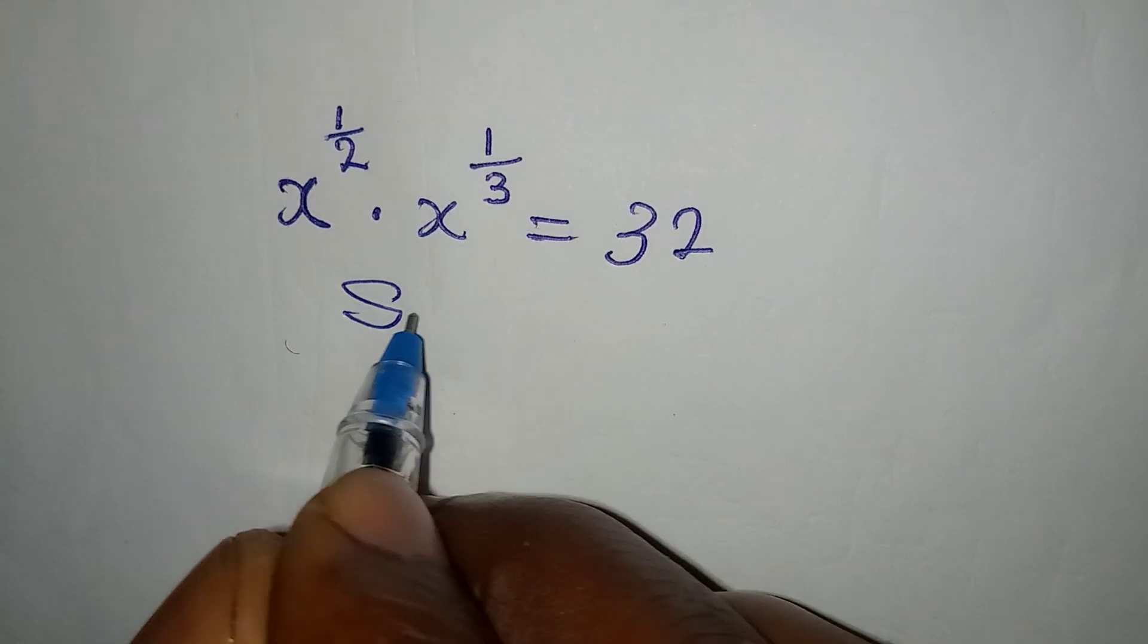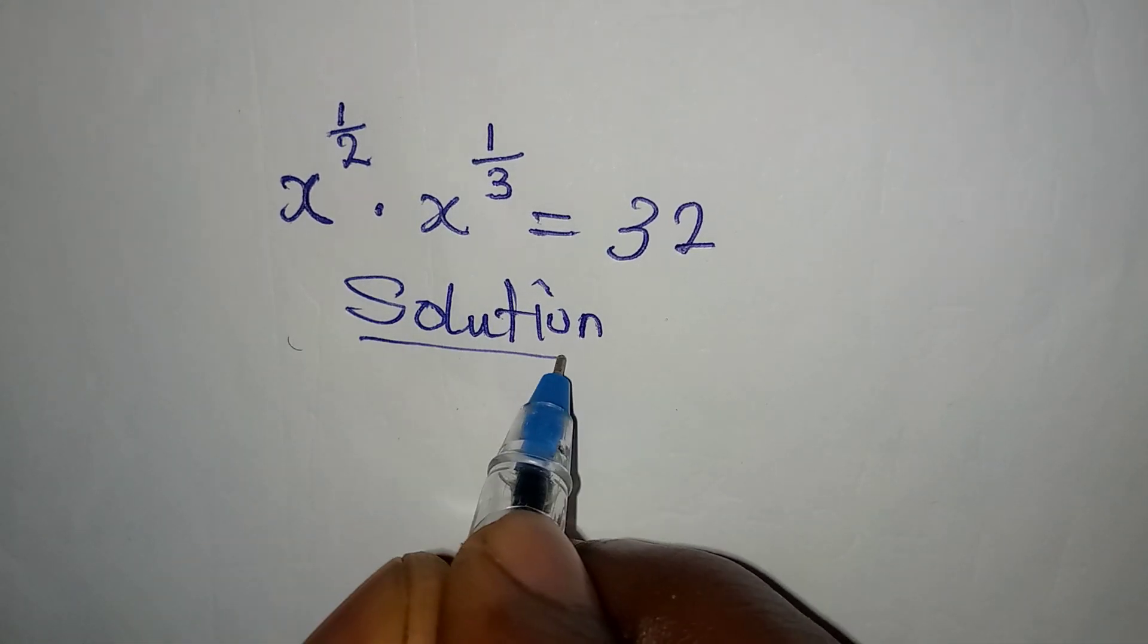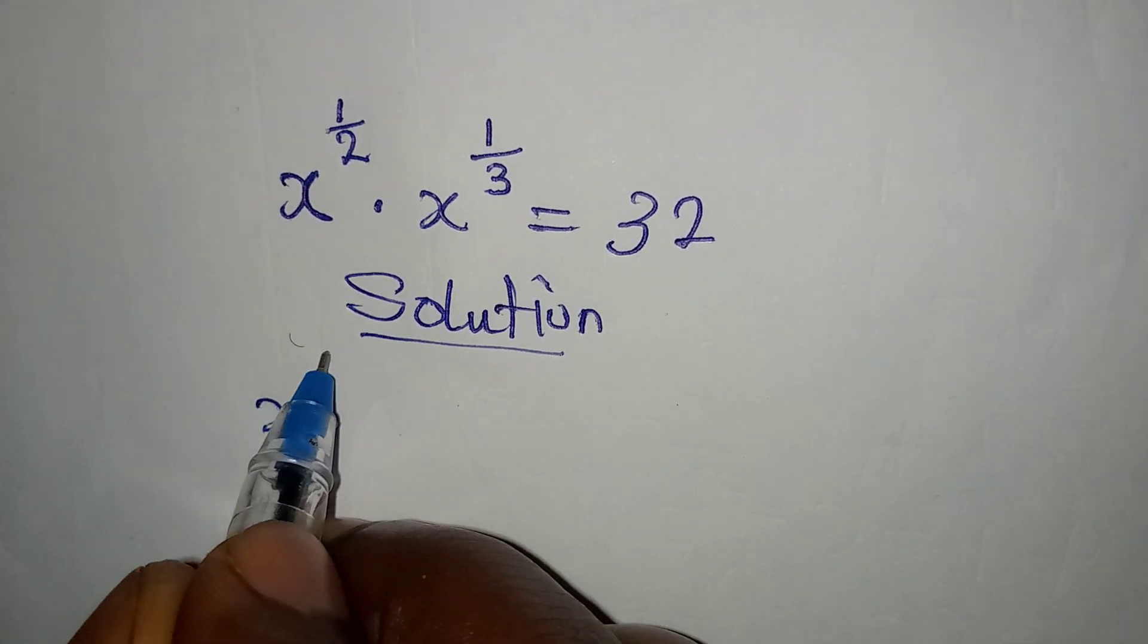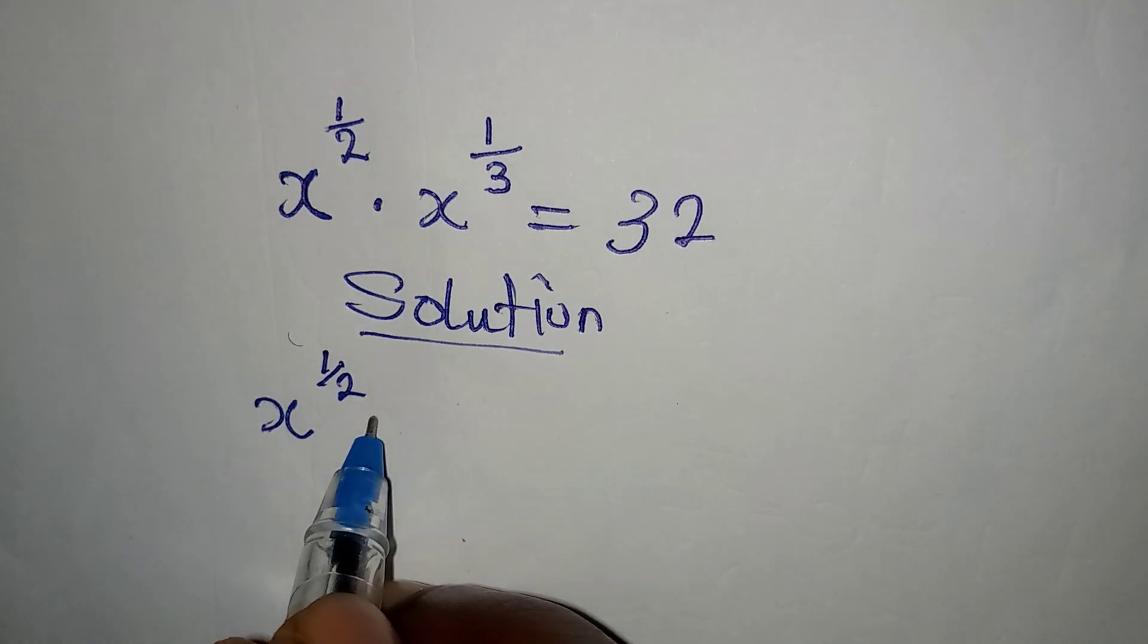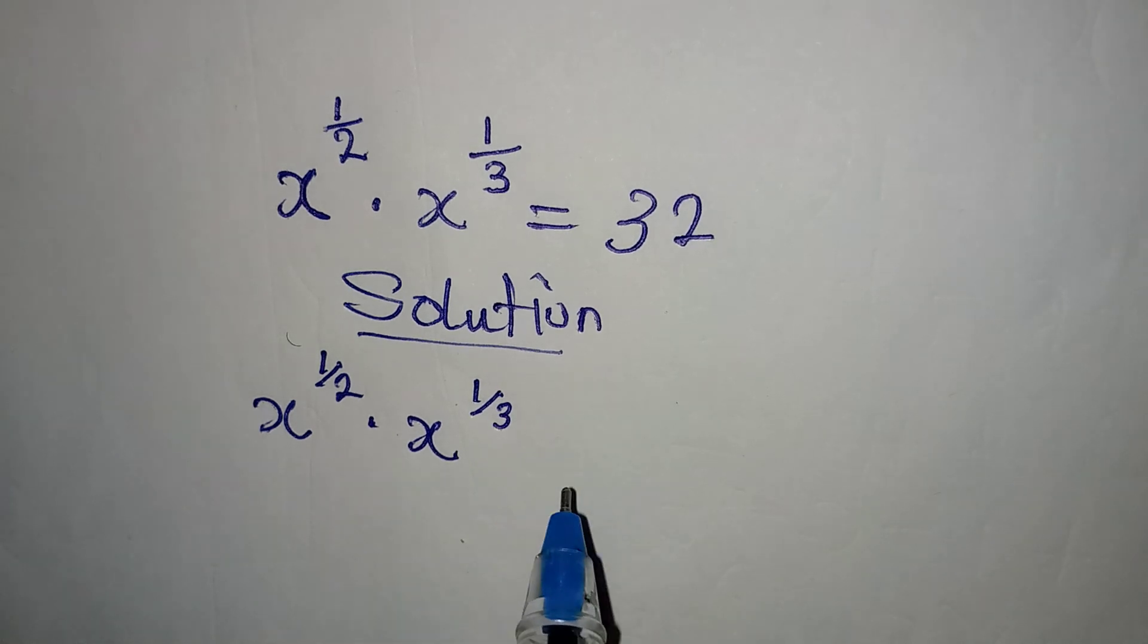Hello everyone. Let us find the value of x in this diagram. We have x to the power of 1 over 2 multiplied by x to the power of 1 over 3, and it is equal to 32.